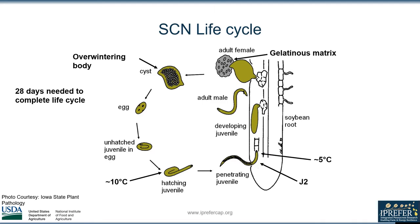Here we have a diagram of the soybean cyst nematode life cycle. The life cycle begins at the cyst, and then eggs release from the cyst in the spring. The female juvenile then penetrates the root epidermis where it develops into an adult. The male adult then fertilizes the female that's embedded in the root. The female then releases her eggs in the matrix and also keeps eggs inside of her body. The female will die and then detach from the root, once again becoming a cyst, which is the overwintering body.